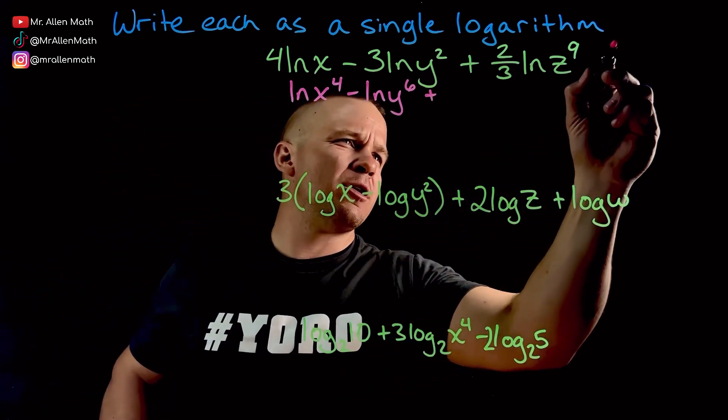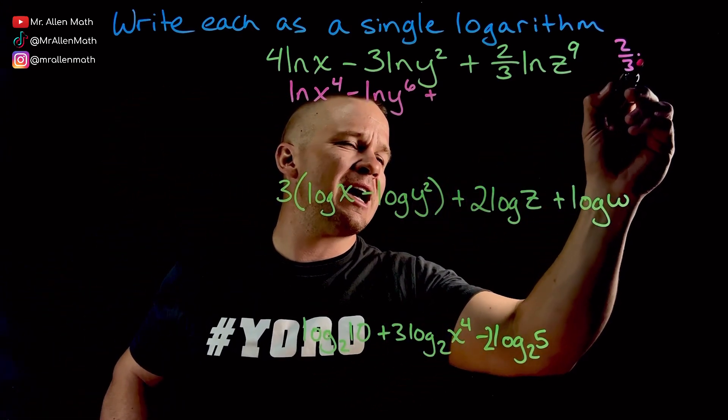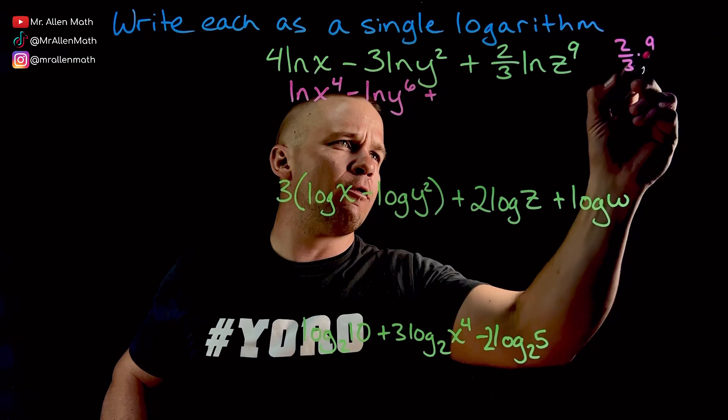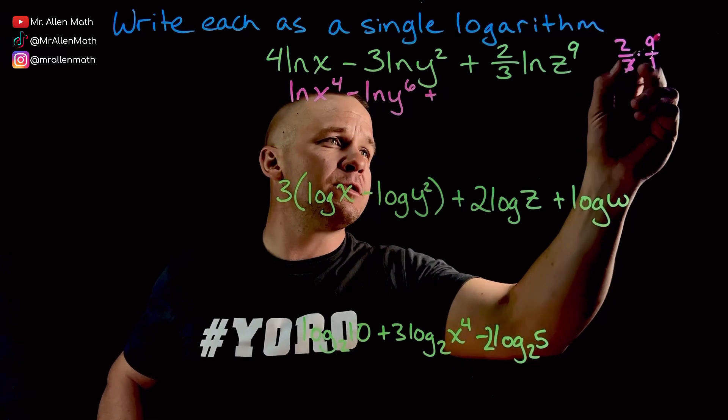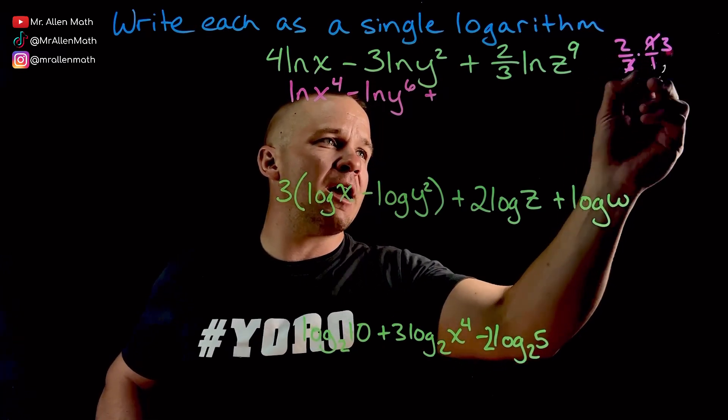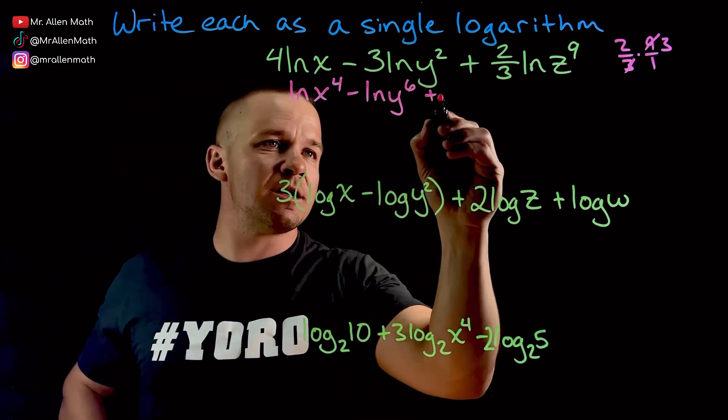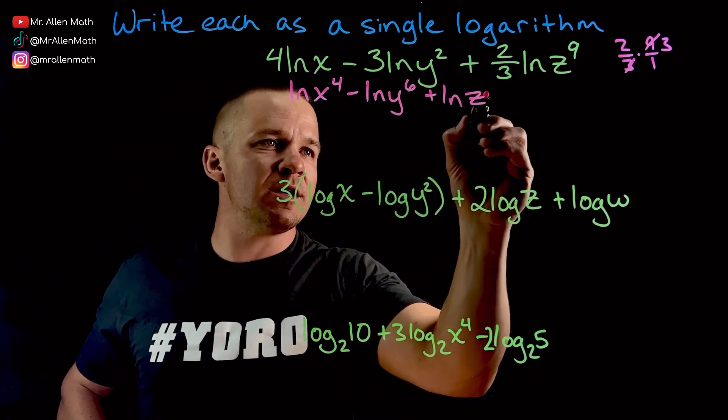I'll do a little side math for you. Two thirds times nine, right? So we'll say nine over one. Maybe that'll help. We can reduce these. That becomes a three right there, and I have two times three. That is going to be six, so I have natural log of z raised to the sixth.